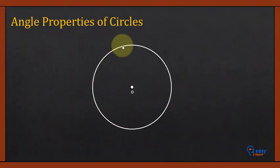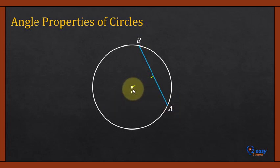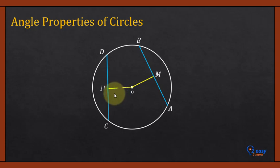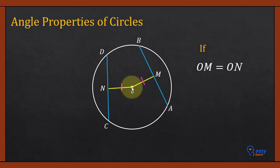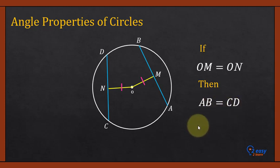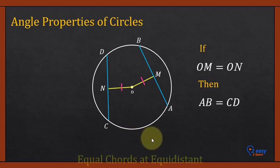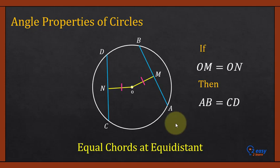You can see a circle with center O. There is a chord AB at distance OM from the center, and another chord CD at distance ON from the center. If both distances are equal — if OM equals ON — then both chords are equal: AB equals CD. So if two or more chords are at equidistance from the center, all chords will be equal in length. This property is called equal chords at equidistance.